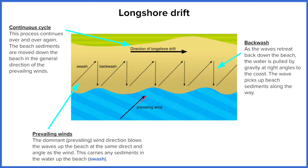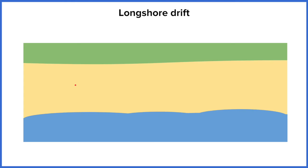Now longshore drift can't happen towards the northeast because the coast doesn't run that way, but it's the most dominant direction to move material along this side of the coast as opposed to that side. So that's it in a nutshell, but let's take this by even smaller steps. Let's go step by step in following a particle — a small bit of pebble.